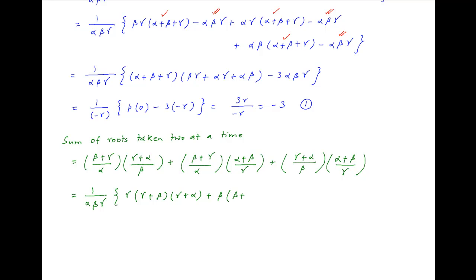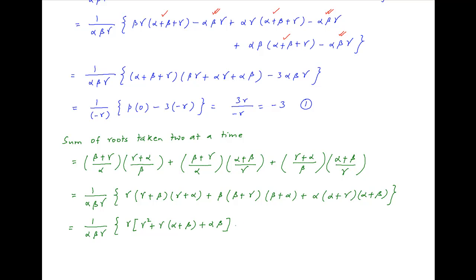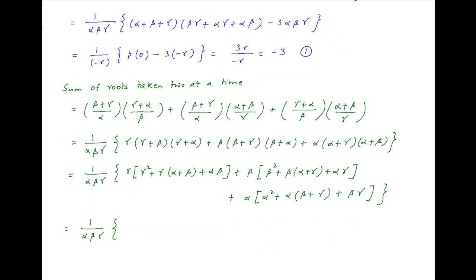Expanding, this equals (1/alpha·beta·gamma) times: gamma·(gamma² + gamma·(alpha + beta) + alpha·beta) + beta·(beta² + beta·(alpha + gamma) + alpha·gamma) + alpha·(alpha² + alpha·(beta + gamma) + beta·gamma).